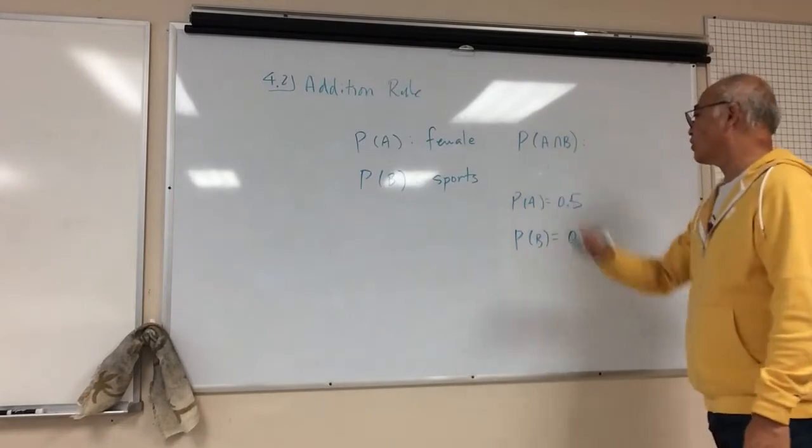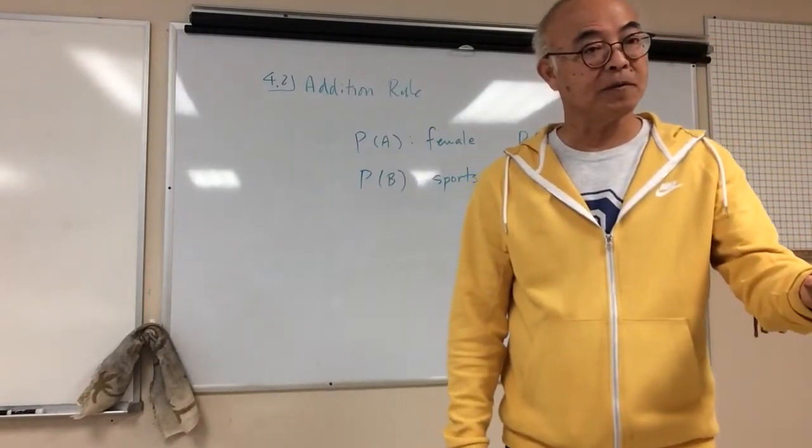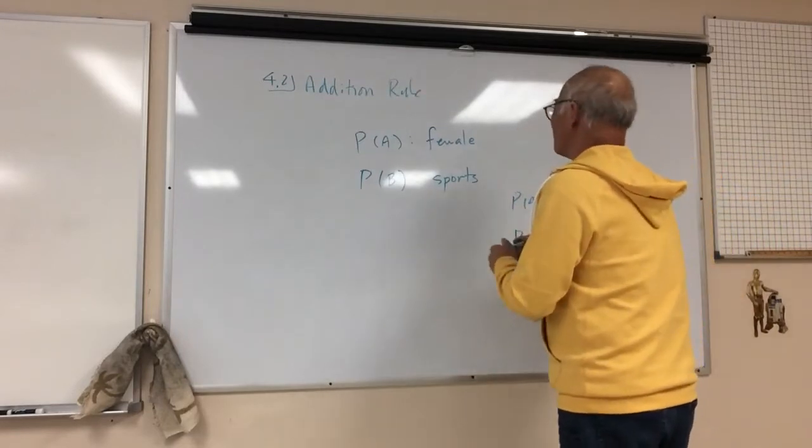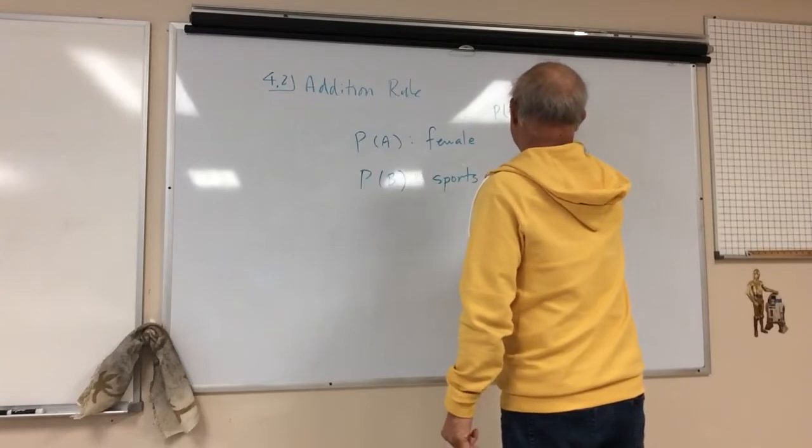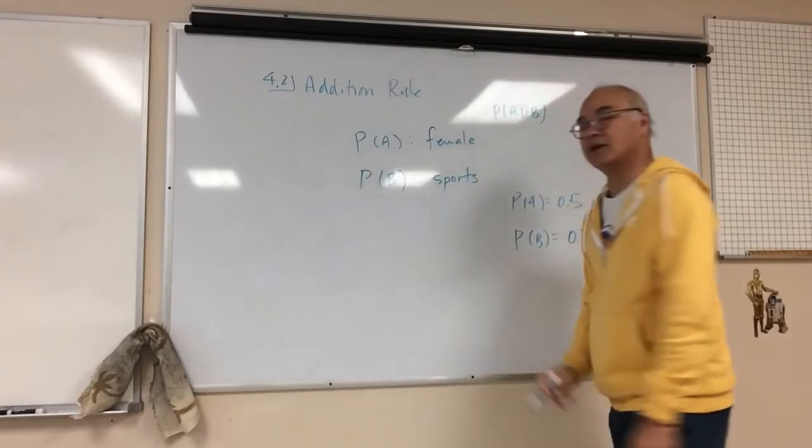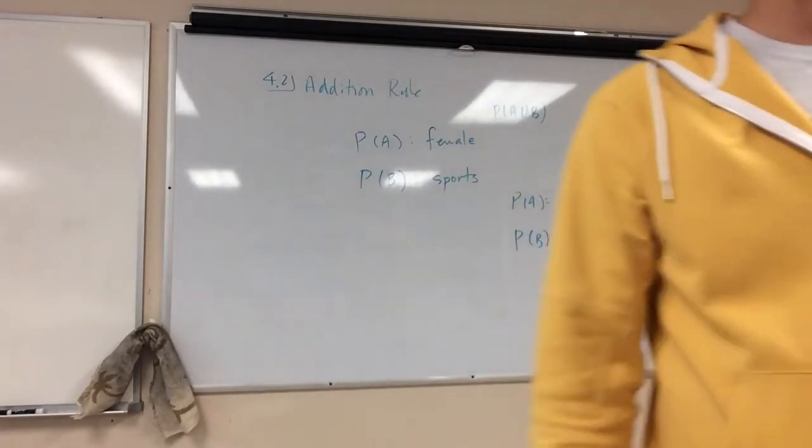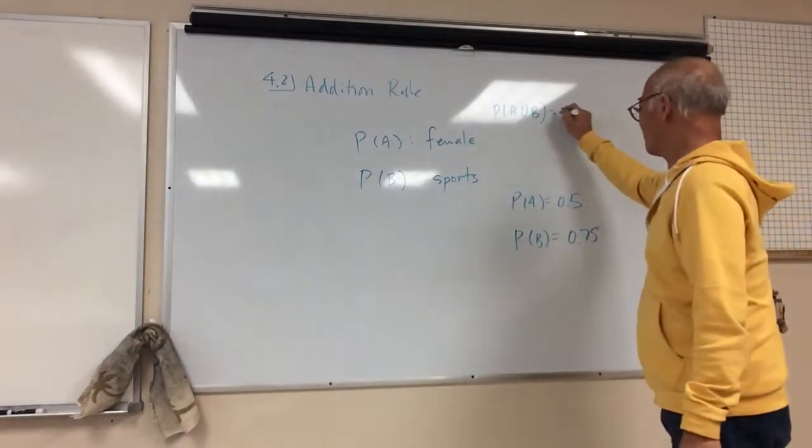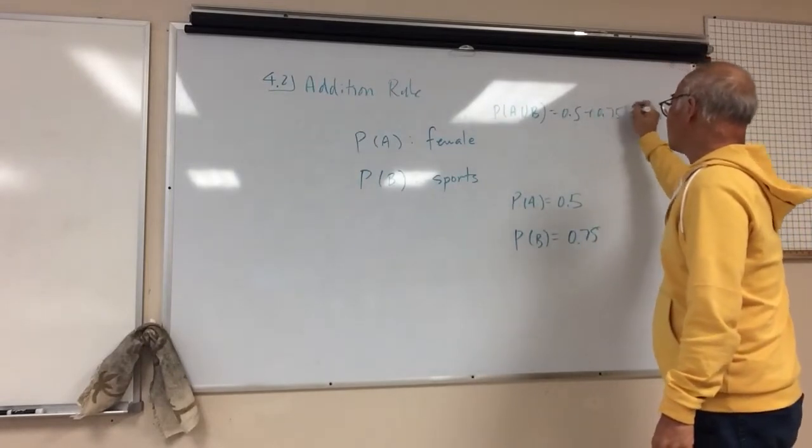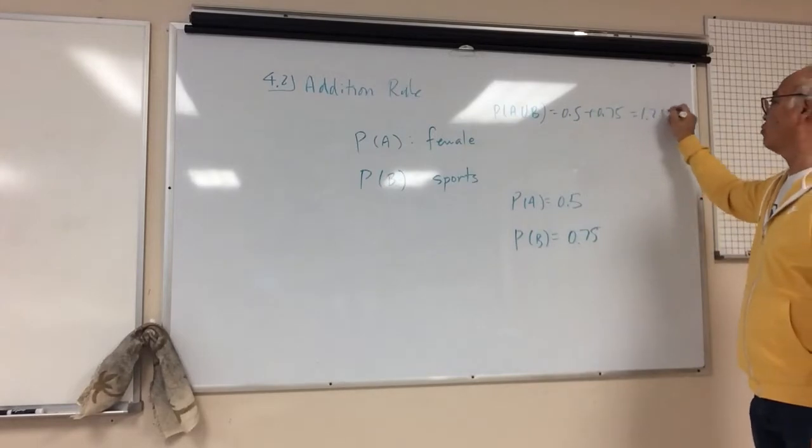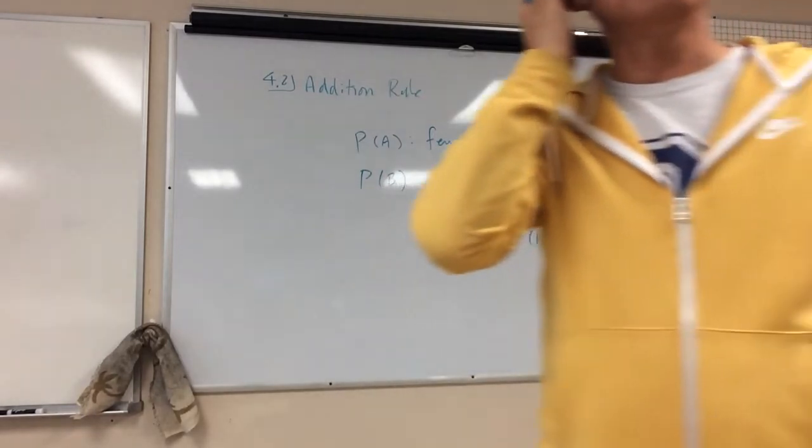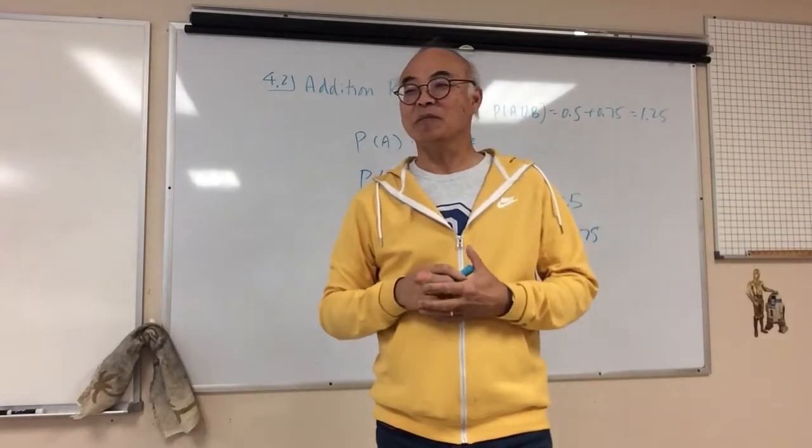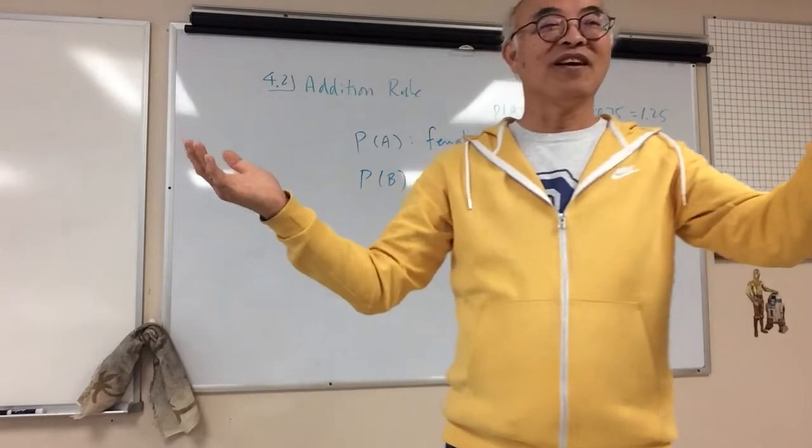So I want to figure out people who are female and play sports. Actually, what I'm really trying to find out is what is the probability of you being either a girl or play sports? So I would just add the two, right? Is that correct? So I get 1.25? Is there a probability above 1.25? How can there be a probability greater than one? You can't have greater than 100% probability, right?